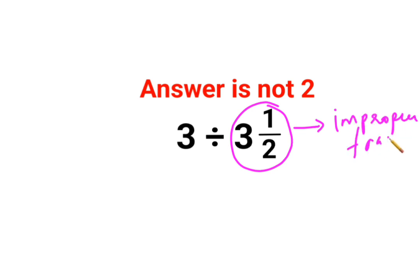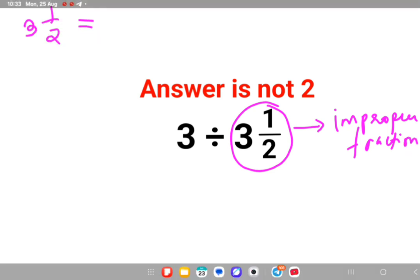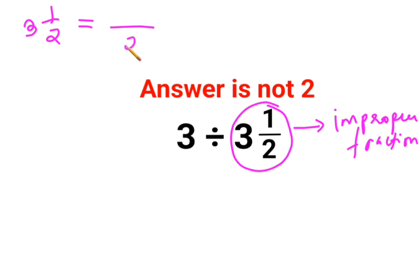So what is the improper fraction form of 3 and 1 by 2? We will continue to write the denominator the same.